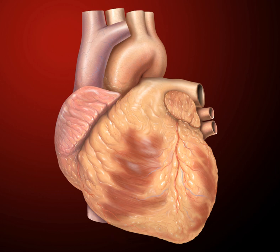The heart functions as a pump in the circulatory system to provide a continuous flow of blood throughout the body. This circulation consists of the systemic circulation to and from the body and the pulmonary circulation. Blood in the pulmonary circulation exchanges carbon dioxide for oxygen in the lungs through the process of respiration. The systemic circulation then transports oxygen to the body and returns carbon dioxide and relatively deoxygenated blood to the heart for transfer to the lungs. The right heart collects deoxygenated blood from two large veins, the superior and inferior venae cavae.